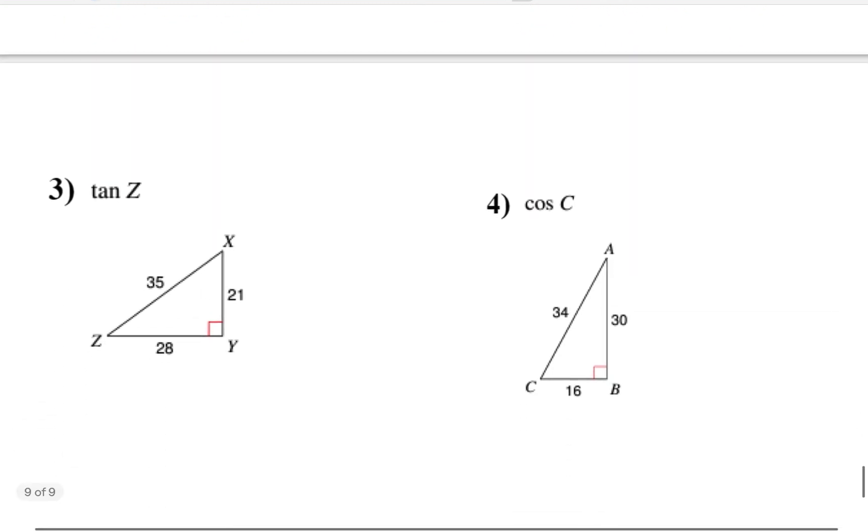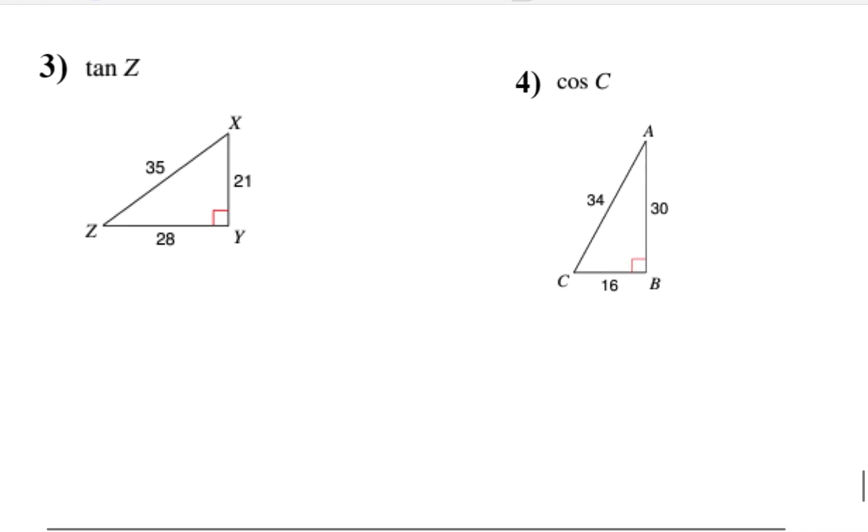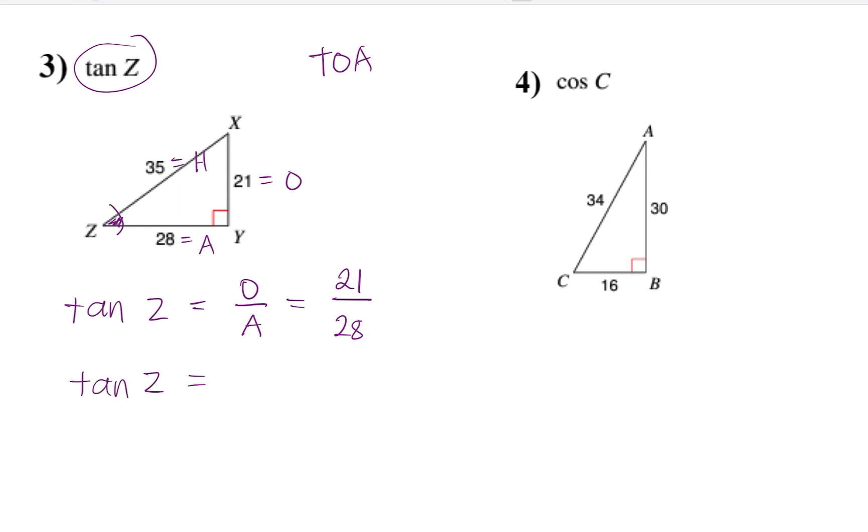Let's try and practice this problem with these given problems right here. Let's try it again. Okay. So in this case, we are asked to find tangent Z. So tangent Z, our reference angle is Z. 21 is O, 28 is A, and 35 is H. And tangent Z, tangent, that's TOA. That's TOA, so opposite over adjacent. So we have 21 over adjacent, which is 28. So if we simplify 21 over 28, that will give us tangent Z equals 3 fourths.